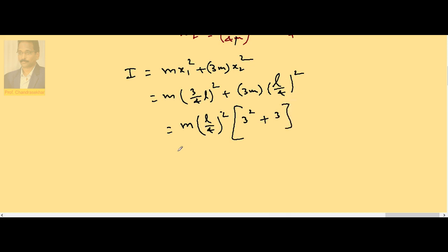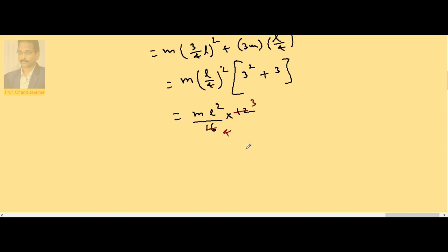Therefore, M into L square by 16 into 3 square is 9, 9 plus 3 is 12. So this is 4 threes, 4 fours. So this becomes equal to 3/4 ML square.